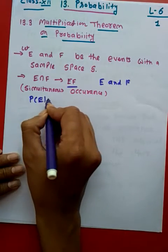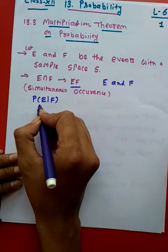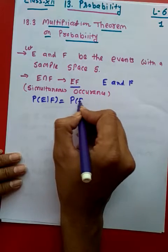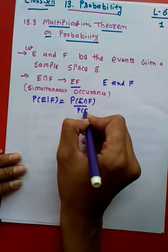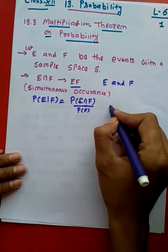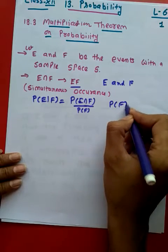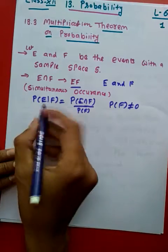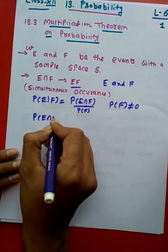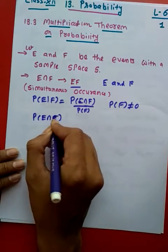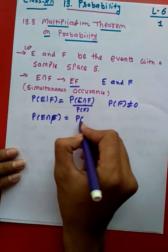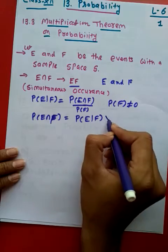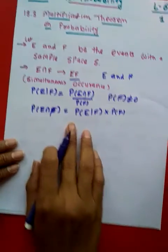If I want to write P of E given F, P of E stroke F, then that can be given as P of E intersection F divided by P of F. And what was the condition? Condition was that probability of F cannot be zero for this equation. So if I will take P of E intersection F as the subject, then I can put it like this: P of E given F multiplied with P of F.